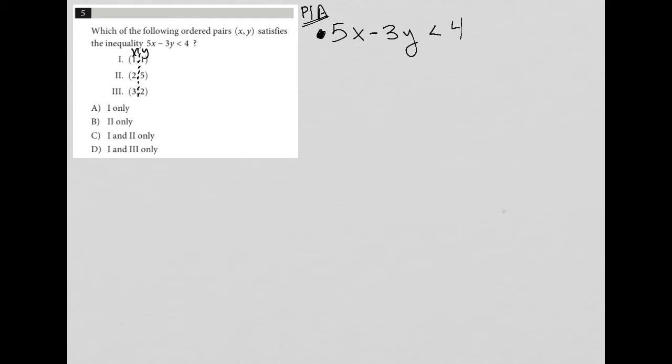Which of the following ordered pairs satisfies the inequality? We can just try them all. So if I try 1, which is (1, 1), that means x equals 1 and y equals 1. We can plug that in to see if that actually is true.